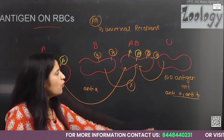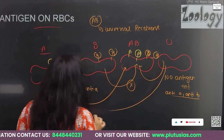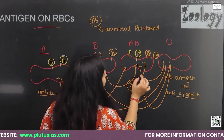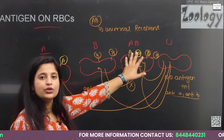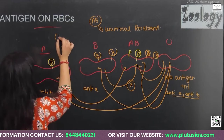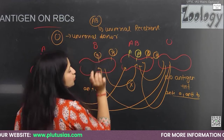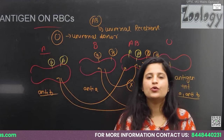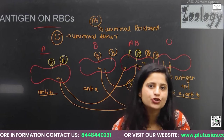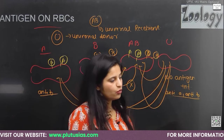O blood group persons don't have any antigen on the surface of RBC, so they can give blood to A, B, AB, and O blood group persons. That is why O blood group is the universal donor. According to the ABO system, AB blood group is the universal recipient and O blood group is the universal donor.